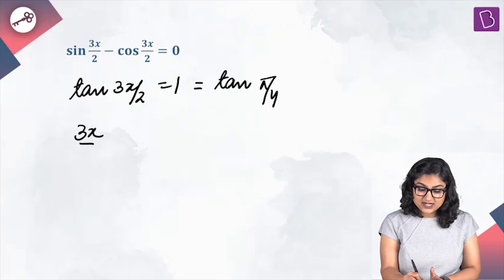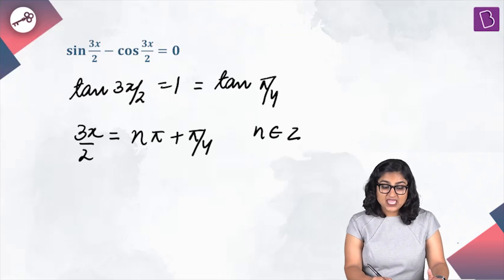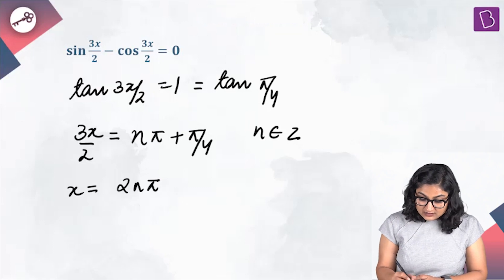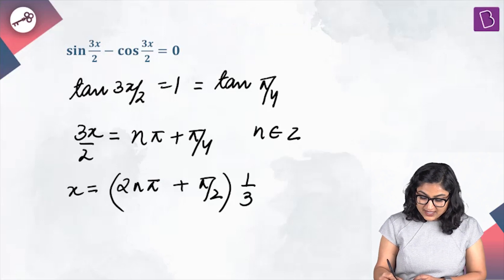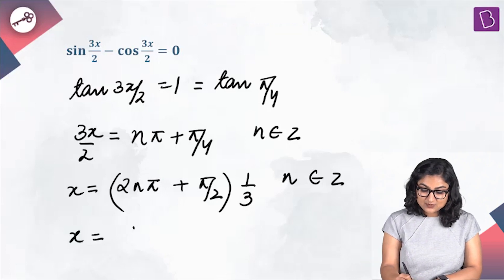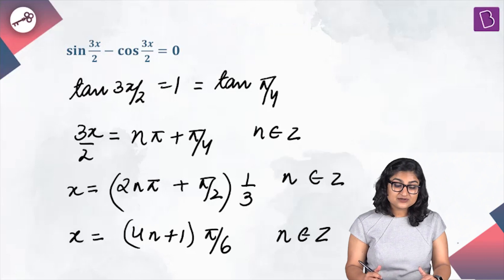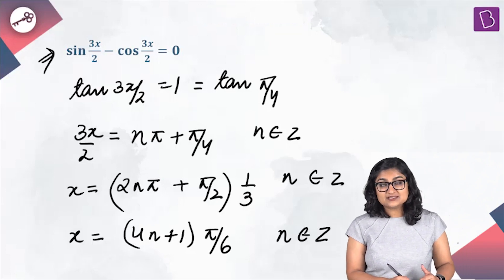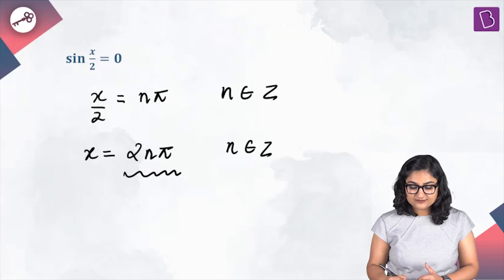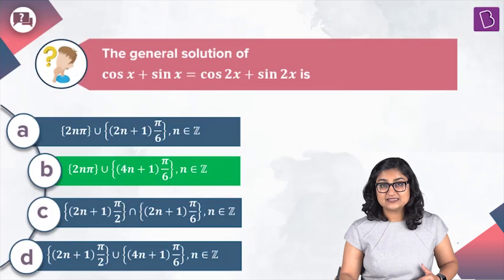From tan(3x/2) = tan(π/4), the general solution is 3x/2 = nπ + π/4, so x = (2nπ + π/2)/3 × (2/3) — simplifying to x = (4n+1)·π/6. Taking the union of x = 2nπ and x = (4n+1)·π/6 gives the complete general solution, which is option B.